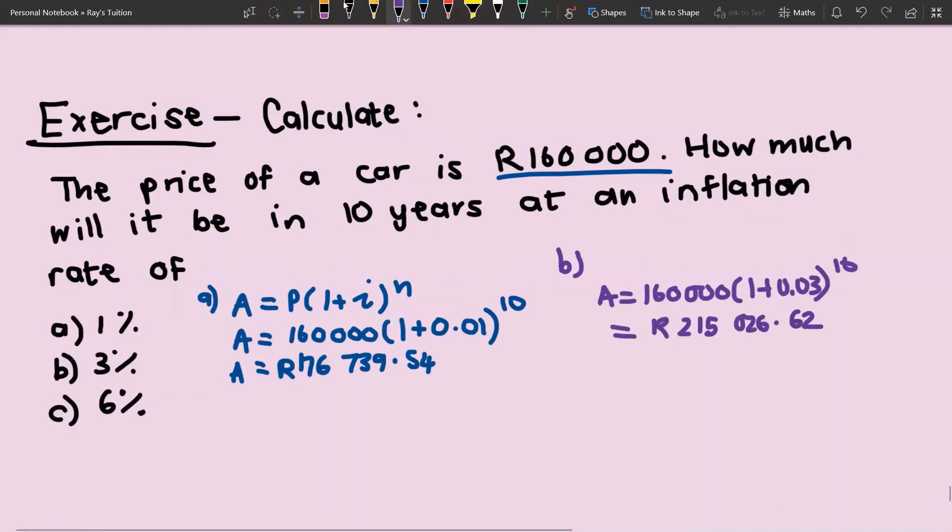The final one is when you have 6%. So A = 160,000(1+0.06)^10, and then calculating that, we get that it will be R286,535.63. So that is inflation. Please take note that whenever they give you a question related to inflation, you need to use the compound interest formula.